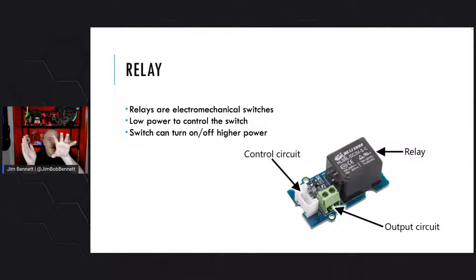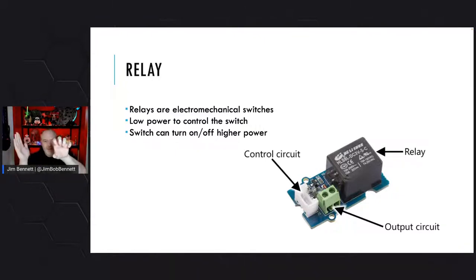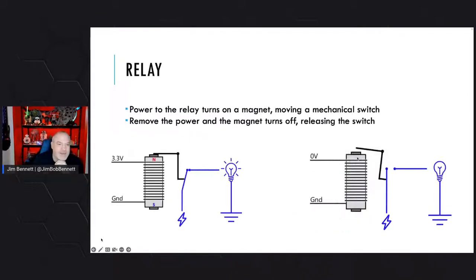It uses a small amount of power to charge up the magnet, brings the connection in, and that connection can then take a large amount of power. When we remove the small amount of power, it releases the magnet and the arm moves away. We have our control circuitry — this is the bit that sends the signal to the magnet. The relay is our big switch, and then we have our output circuit. The output circuit is only connected when an electrical signal goes to the relay to turn on the magnet.